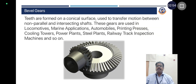Bevel gears: Teeth are formed on a conical surface and are used to transfer motion between non-parallel and non-intersecting shafts. These gears are used in locomotives, marine applications, automobiles, printing presses, cooling towers, power plants, steel plants, railway track inspection machines, and so on.